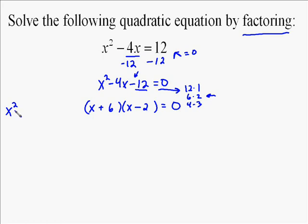We can try to see if this is correct. You multiply it out: x times x is x squared, x times negative 2 is negative 2x, 6 times x is 6x, 6 times negative 2 is negative 12.